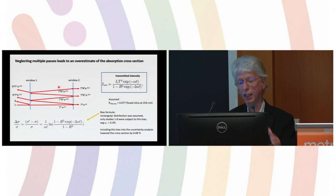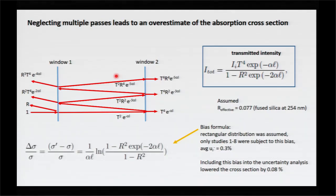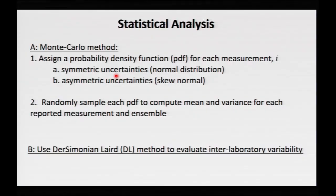This is how we analyzed the effect of multiple passes through the cell. We came up with a simple model to account for this effect—simply the reverberation of the light between two parallel windows. What happens is the actual path length that you really need to use is greater than the geometrical path length between the windows, which leads to an underestimate or an overestimate of the cross-section. This effect changed our final result by 0.08 percent.